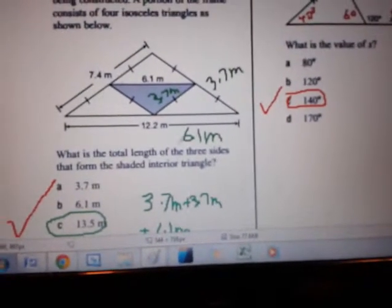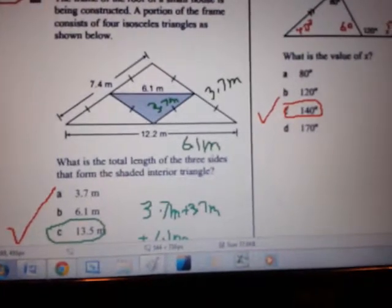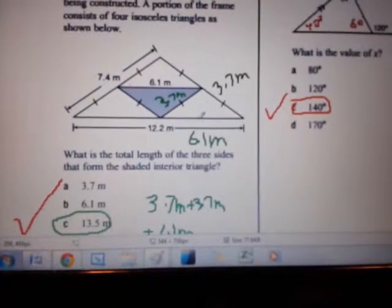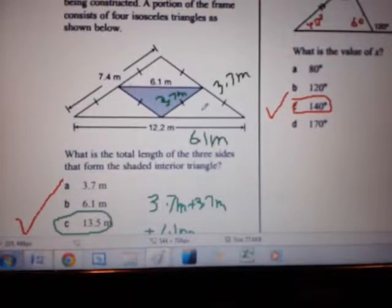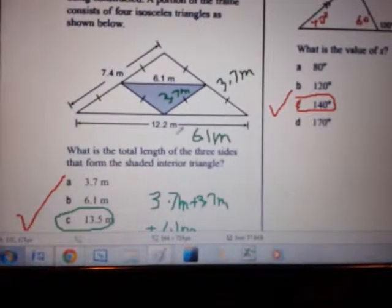This is a pretty easy question as we're working with isosceles triangles. 12.2 meters is the base of the large triangle here. This white triangle is the same as the other two here. All three have the same base length, so the base of this triangle is half of 12.2 meters.